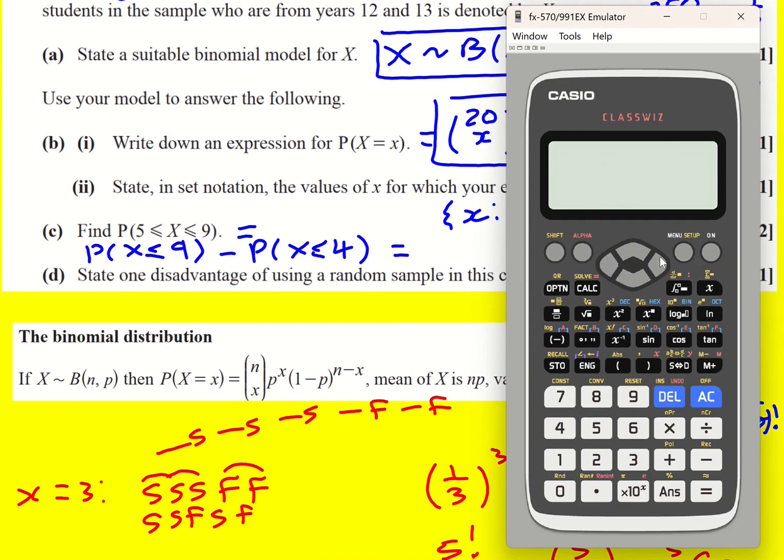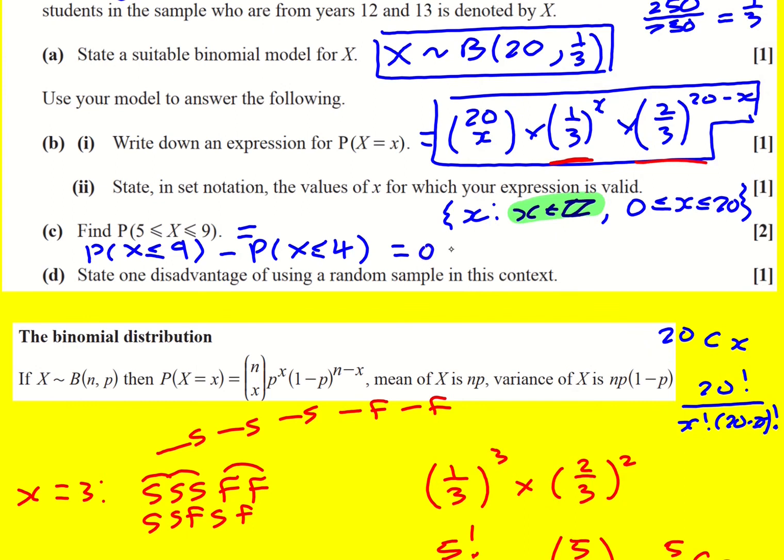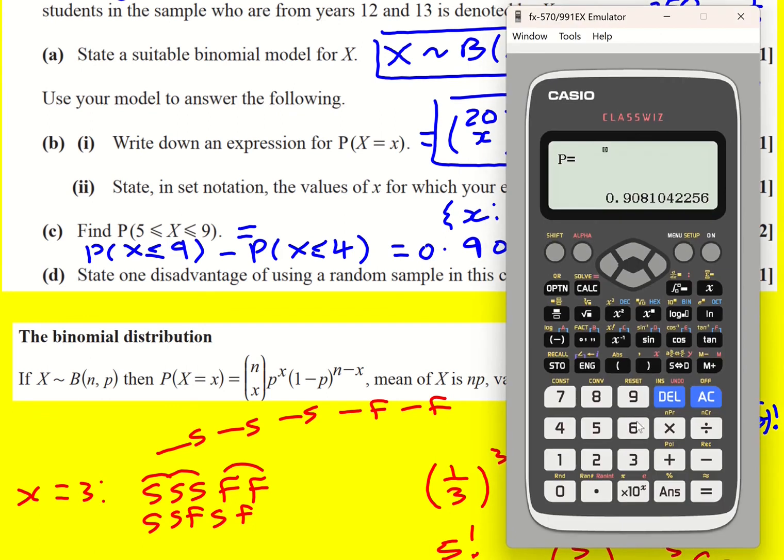So I'm going to go to distribution, binomial cd, cumulative distribution, and then I'll just use a variable that means one at a time, 9, 20 trials, a third, and I get 0.908. Then do exactly the same, press equals, take it back to 4, 0.1515.